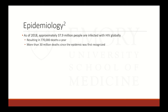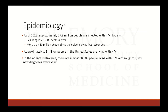As of 2018, approximately 38 million people are infected by HIV globally, resulting in about 770,000 deaths per year and more than 30 million deaths since it was first recognized in the early 1980s. Approximately 1.2 million people in the United States are living with HIV. In the Atlanta metro area, there are about 38,000 people living with HIV with roughly 1,600 new cases a year — meaning our catchment area covers about 1 in 30 HIV patients in the United States.